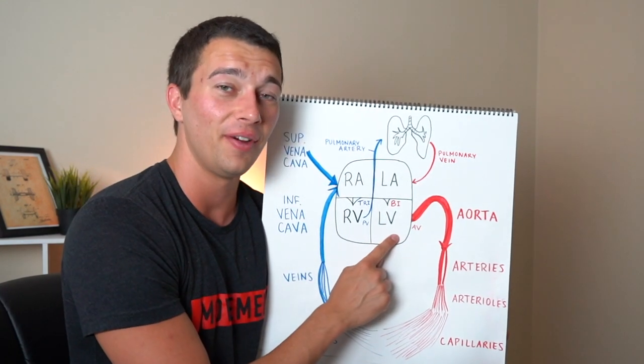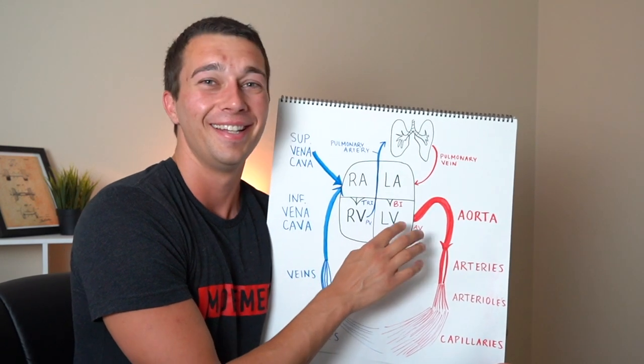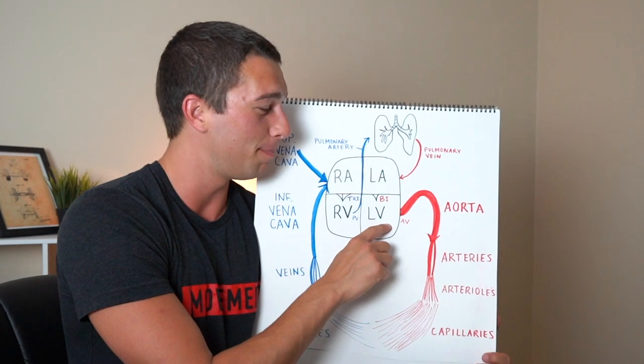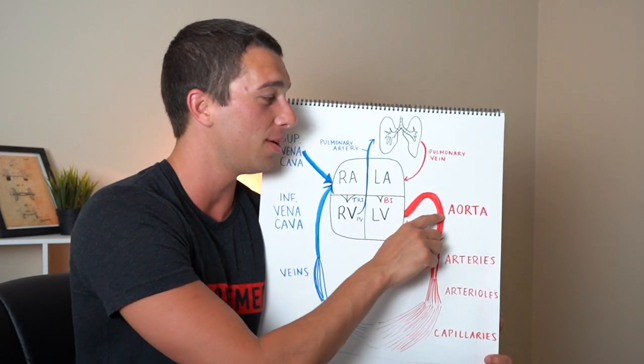All right now we're in the left ventricle. She's thick, big. This is the biggest thickest chamber over here, the left ventricle and it's going to get pumping blood out into the aorta.